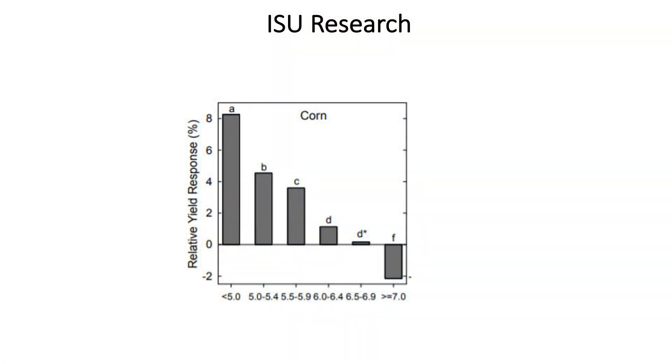Iowa State University recently completed some studies and field trials on soil pH and liming. I really encourage you to go online and look at Dr. Mallarino's published paper, but we're going to give you the Cliff Notes version here. Dr. Mallarino found that when soil pH levels start dropping below 6.4 we begin to see a little bit of a yield response to lime applications. But where it really starts to become an economic response is once we start getting below a soil pH of 6.0.